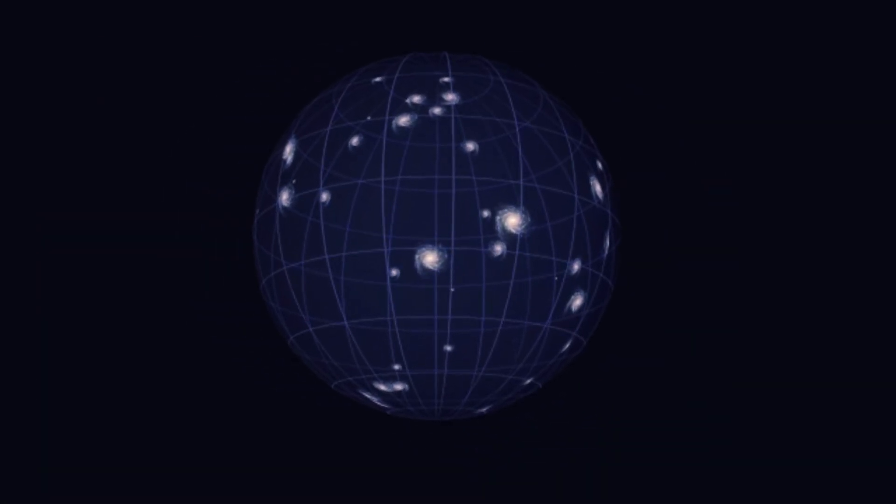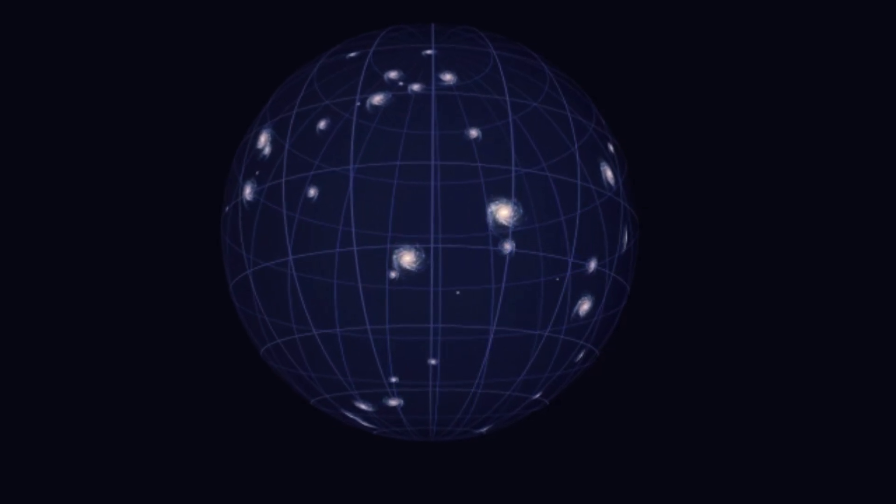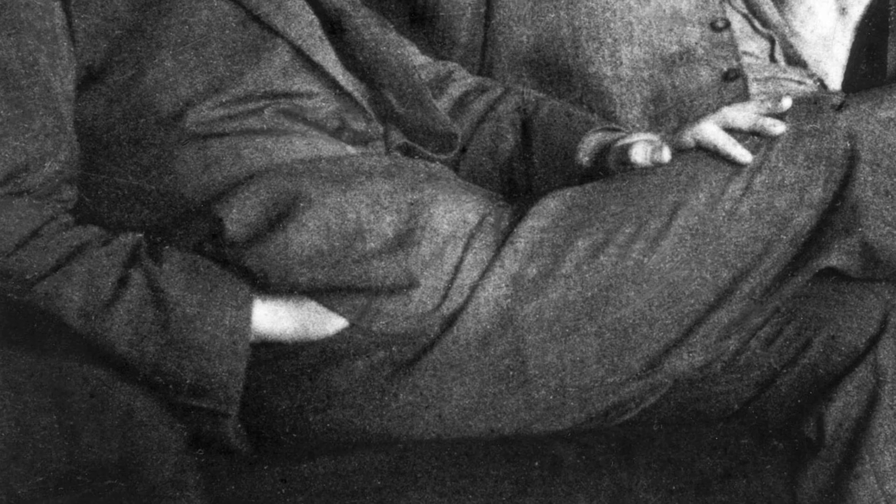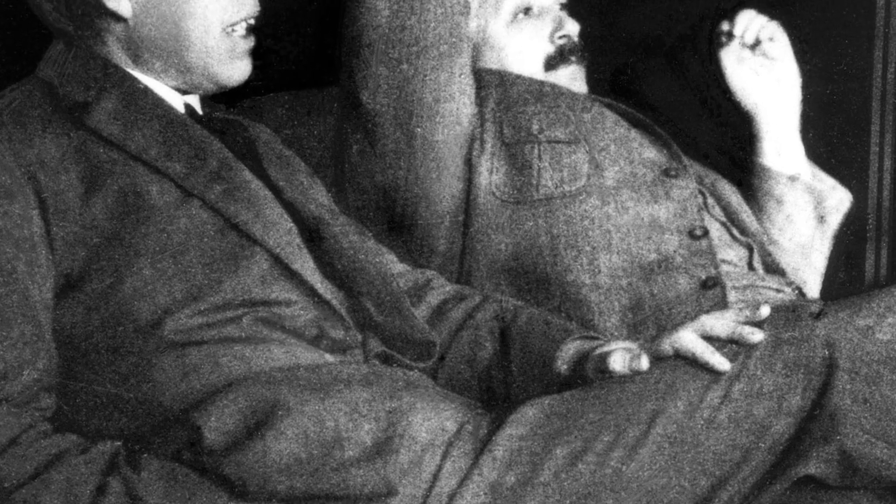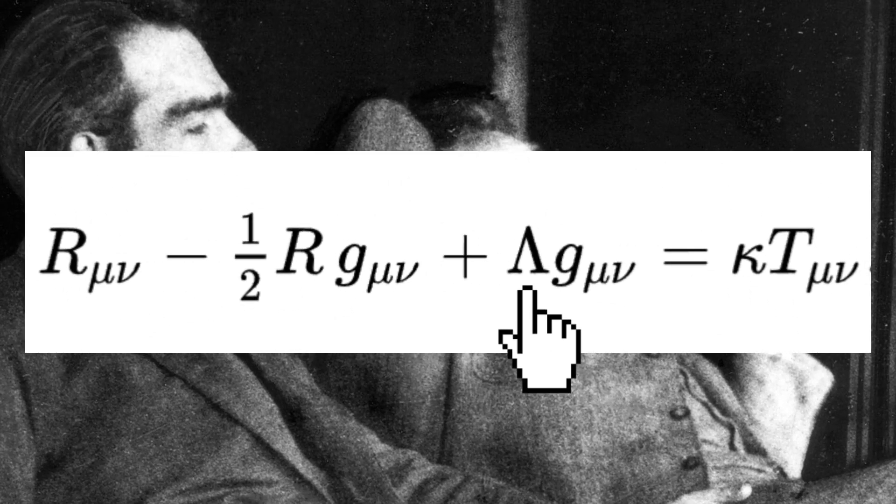There was just one problem with the theory. It also predicted that the universe was not static. Einstein then spent years trying to figure out ways to amend general relativity to include some cosmic constant, so that the universe could stay static.